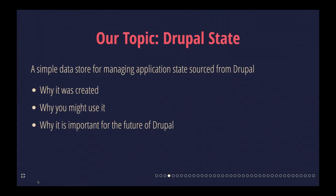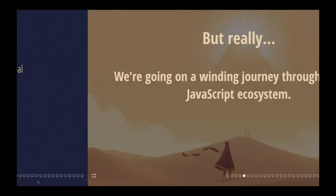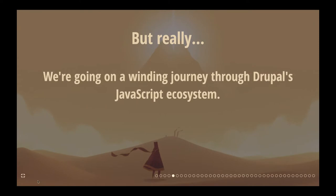What we're going to talk about today, partially anyway, is a library called Drupal State that is a general project on Drupal.org. It's a simple data store for managing application state sourced from Drupal and Drupal's JSON API. We'll talk about why it was created, why somebody might use it, and why I think that library or something like it is important for the future of Drupal. This is also going to be kind of a winding journey through Drupal's JavaScript ecosystem, specifically the Decoupled Drupal ecosystem. So buckle up.